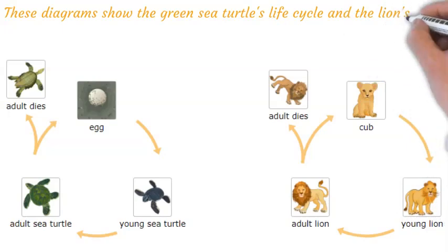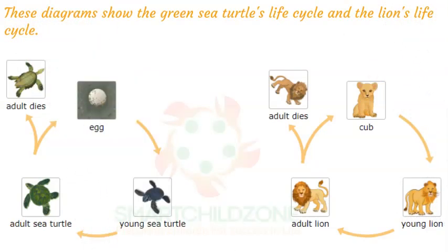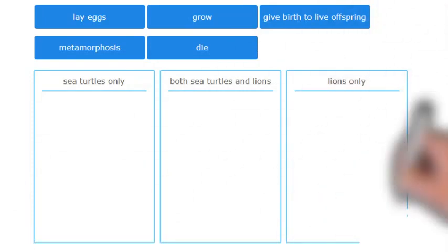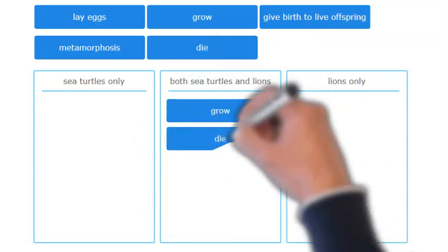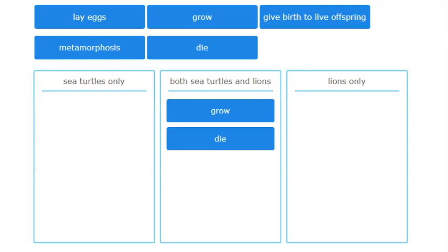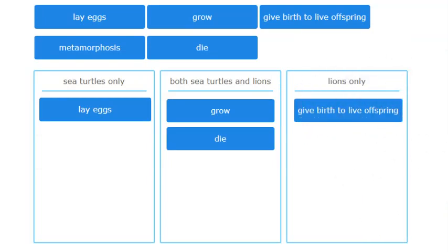These diagrams show the green sea turtle's life cycle and the lion's life cycle. Compare the two life cycles and put each life cycle event into the correct column. Some events might not belong in any column. All organisms grow and die, so that goes in the column for both. Sea turtles lay eggs, while lions give birth to live young. Sea turtles and lions do not go through metamorphosis. Young sea turtles grow up to be adult sea turtles, and cubs grow up to be lions.